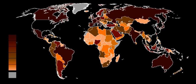The international standard for measuring GDP is contained in the book System of National Accounts, which was prepared by representatives of the International Monetary Fund, European Union, Organisation for Economic Cooperation and Development, United Nations, and World Bank. The publication is normally referred to as SNA 93 to distinguish it from the previous edition published in 1968 called SNA 68. SNA 93 provides a set of rules and procedures for the measurement of national accounts. The standards are designed to be flexible, to allow for differences in local statistical needs and conditions.